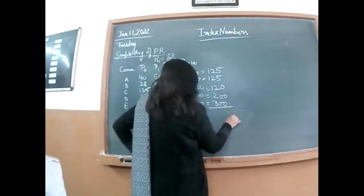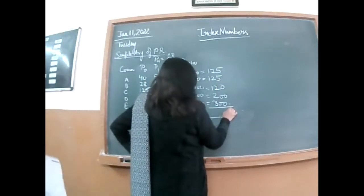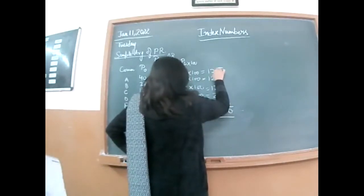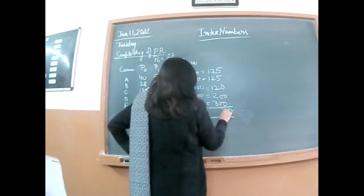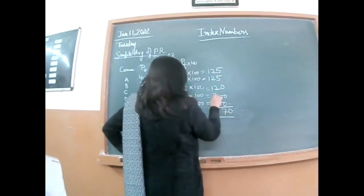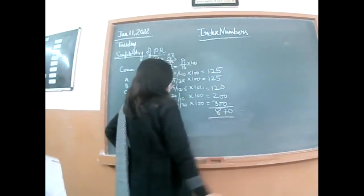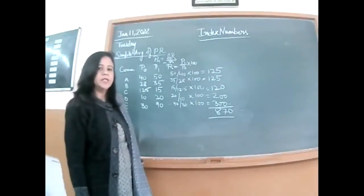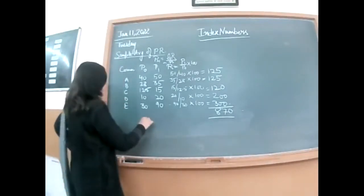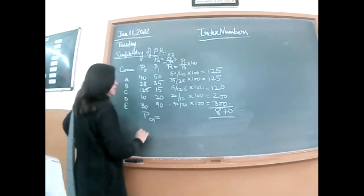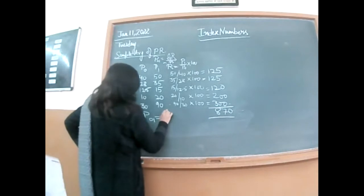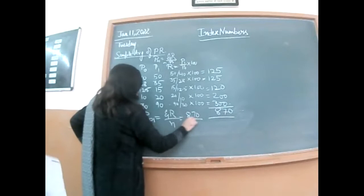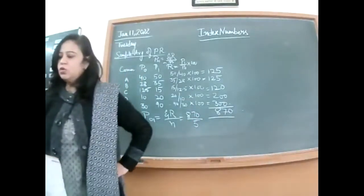Total. So let's calculate T01, that is the index number of the current year. Summation R over N. 870 over 5. So it comes out to be?